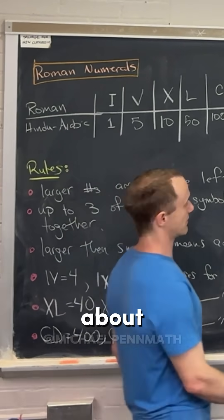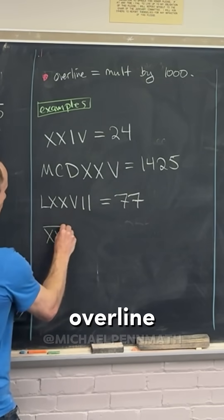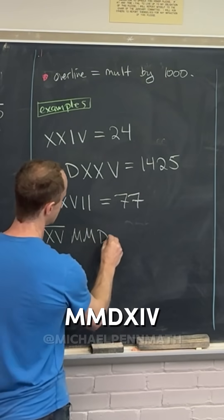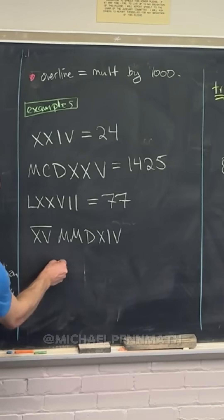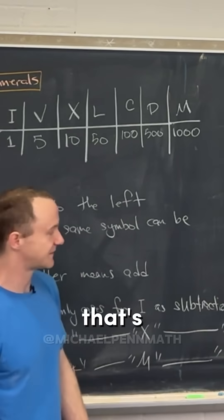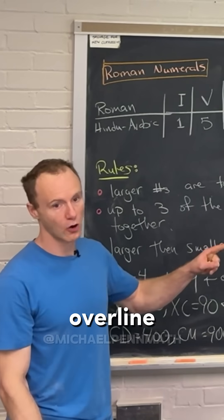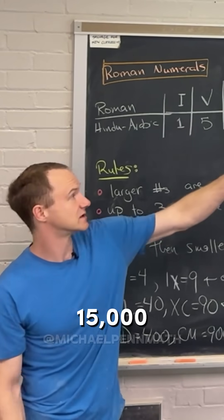Then maybe what about this XV overline MMDXIV? So let's see this one. This XV, that's 15, right? But then it's got the overline, which means it's 15,000 by the rule up there, so this is 15,000.